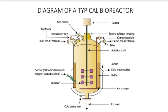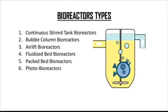Next, we are going to discuss the types of bioreactors. The types of bioreactors are the continuous bioreactor, bubble column bioreactor, airlift bioreactor, fluidized bed bioreactor, packed bed bioreactor, and photobioreactor.